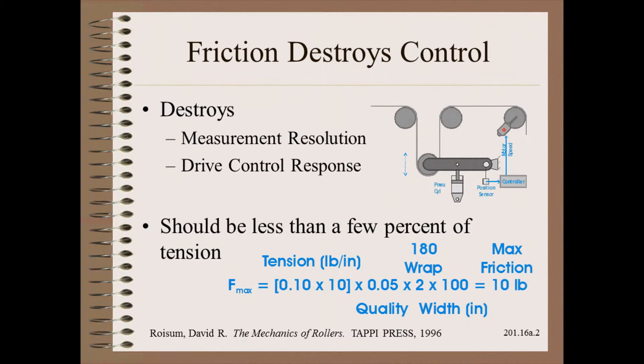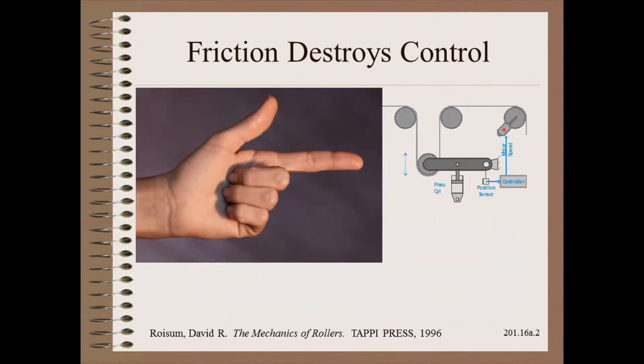In many cases, this is only a few pounds or a couple of kilograms, as seen in this example for an ordinary web on a wider machine. Narrower machines or more delicate webs must even be better. In most cases, dancer design needs to be so delicate that you could displace the dancer assembly with your little finger.